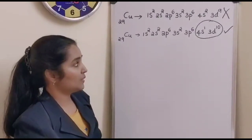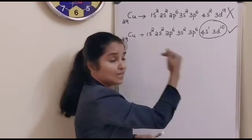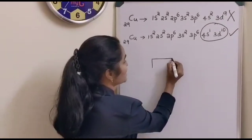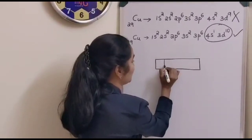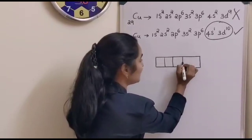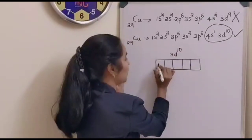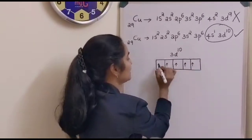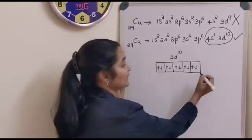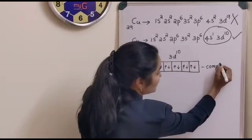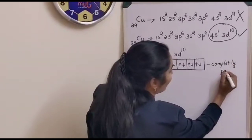What may be the reason? This is because, in order to attain the extra stability offered by the completely filled outermost shell. The 3d is a degenerate orbital — orbitals with the same energy — containing 5 d orbitals. If it is 3d10, all 10 electrons fill the 5 orbitals completely, giving a completely filled orbital which provides extra stability to the atom.